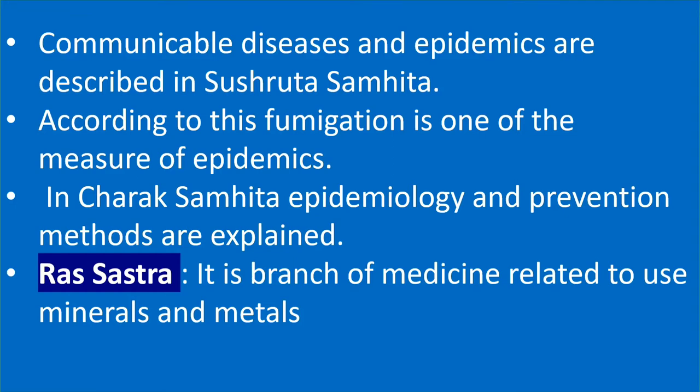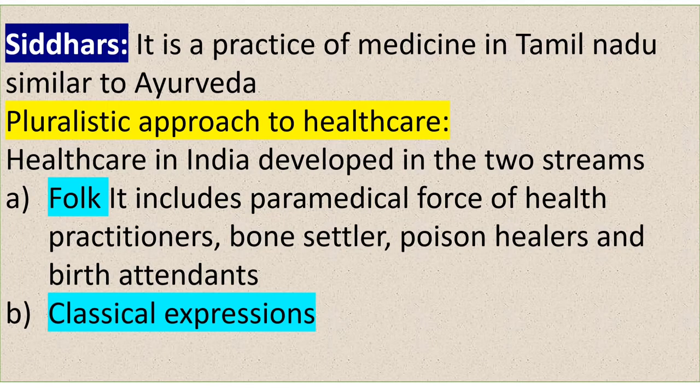In Charak Samhita, epidemiology and prevention methods are also explained. Ras Shastra is a branch of Ayurvedic medicine related to the use of minerals and metals — it describes how diseases can be cured using minerals and metals.